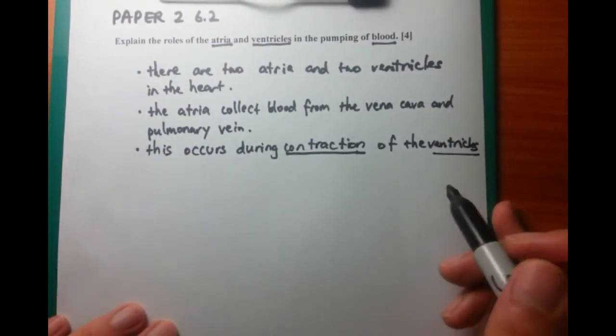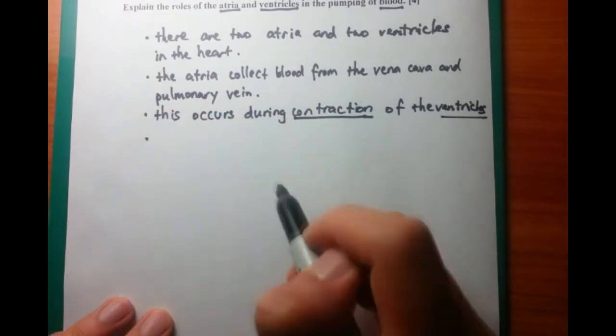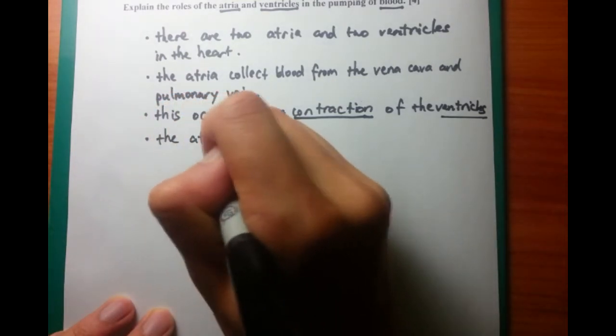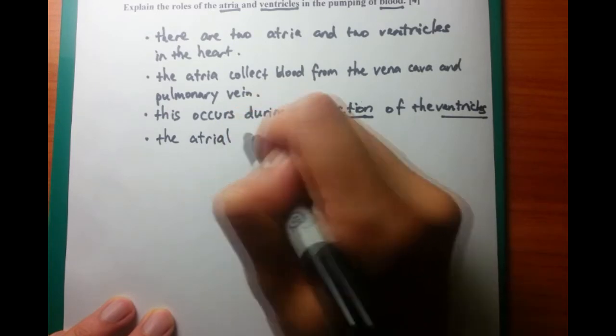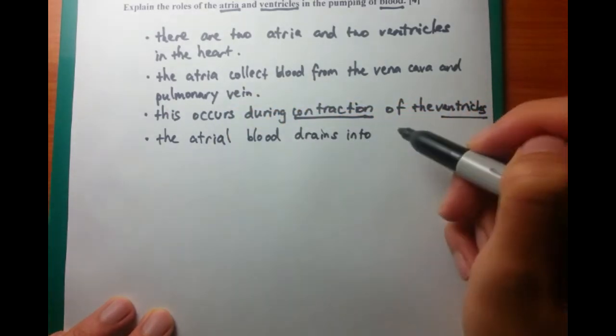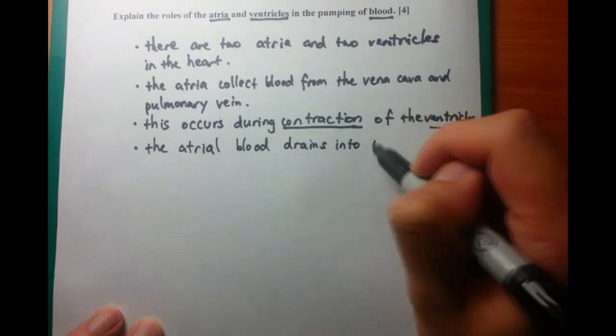So we were talking about the atria. We talked a bit about when this occurs. The next thing we want to do is where does atrial blood go to? And this is easy. Atrial blood drains into the ventricles. Left atria into the left ventricle, right atria into the right ventricle.